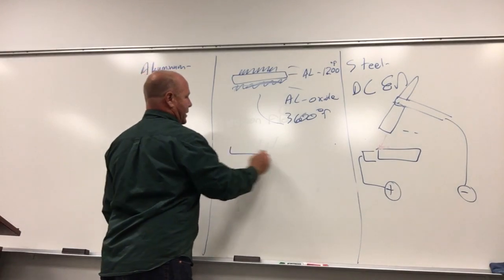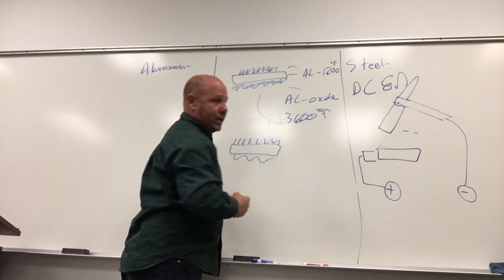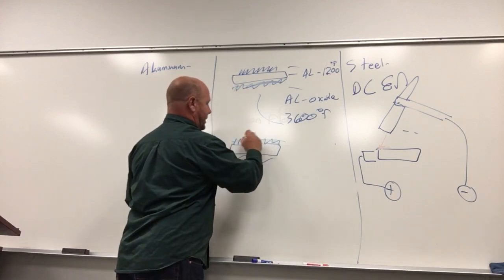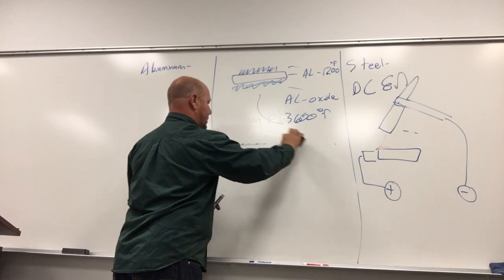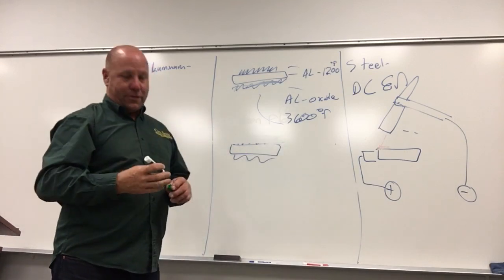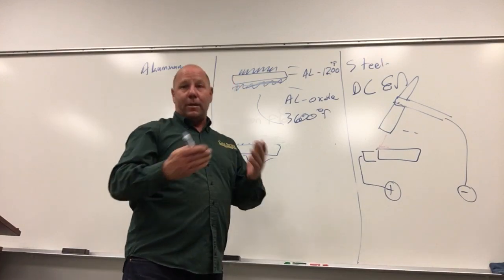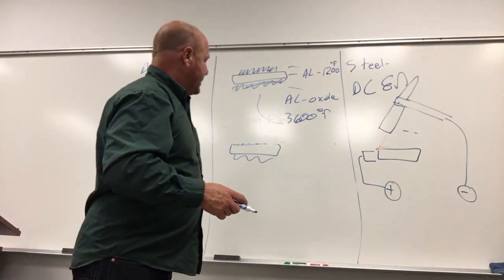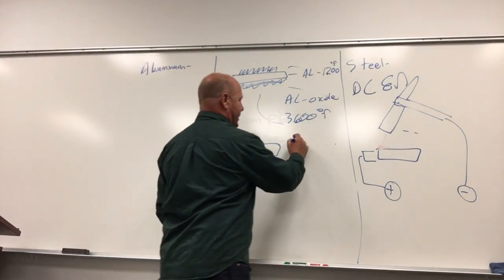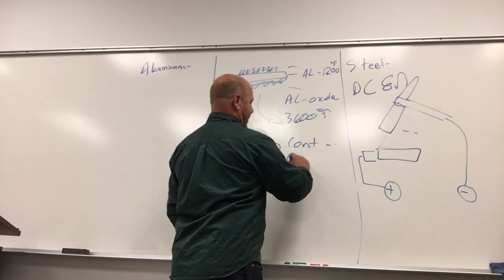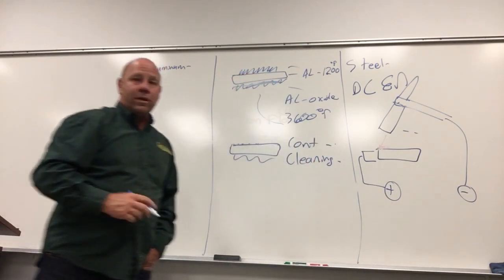The first thing we're going to do with aluminum: take a wire brush and scrub all this off. That's not enough, though. Because while we're welding, we expose that aluminum to any oxygen at all, it immediately forms these little oxides. So in addition to that, we need to clean the aluminum continuously. We need continuous cleaning.